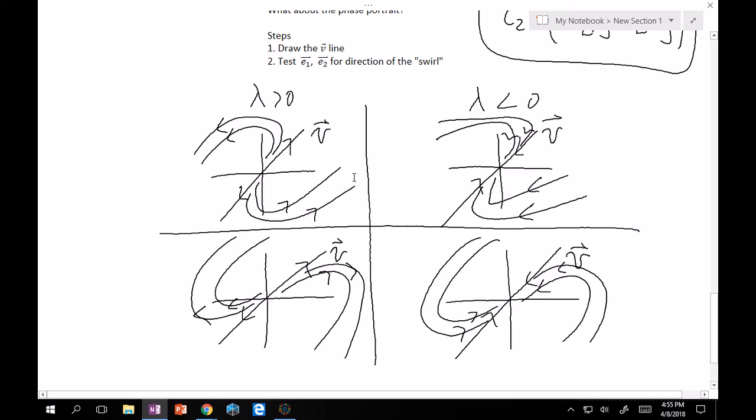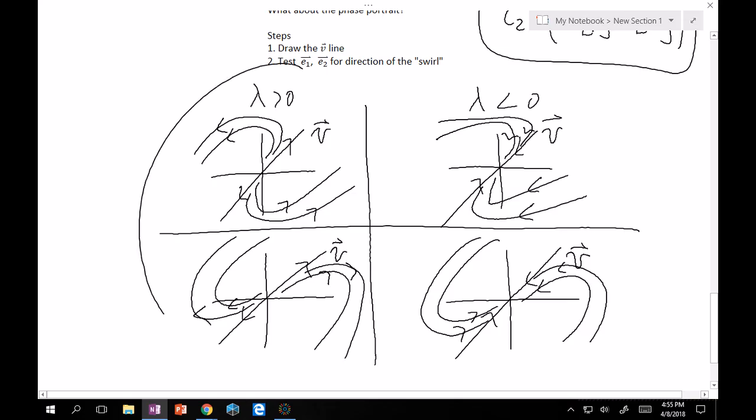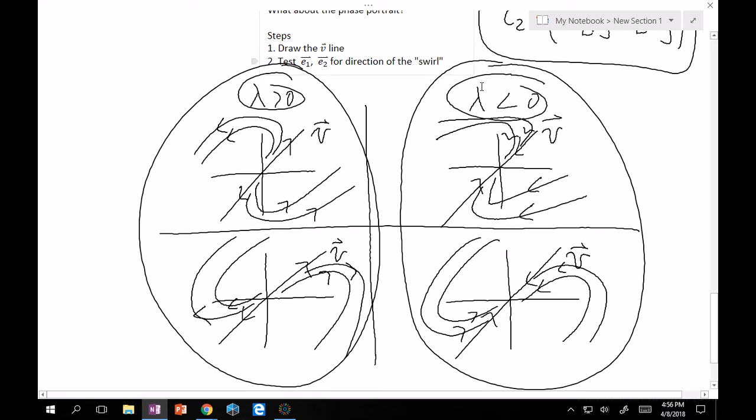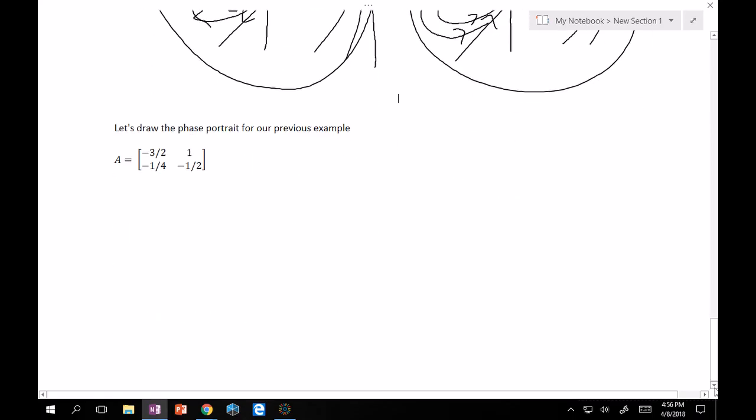And they all kind of like swirl like this, right? They either swirl towards the origin or swirl away from the origin. And you're guaranteed to always land to one of these four cases. And I've separated them out. So, you'll know it's either one of these two if lambda is greater than 0, or one of these two if lambda is less than 0. So, they either go towards the origin or they go away from the origin. Same kind of thing that we've been dealing with before. So, let's do it for the previous example.